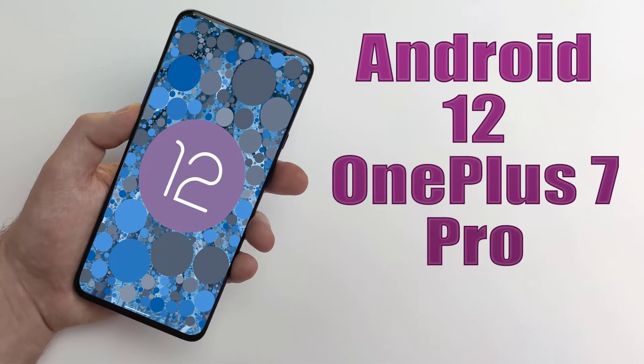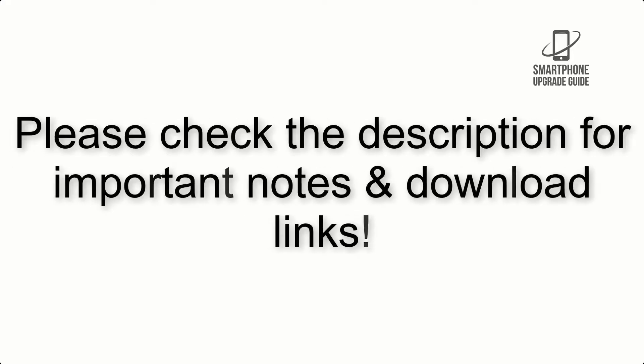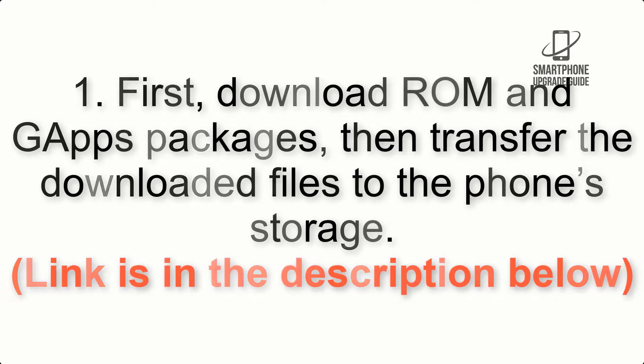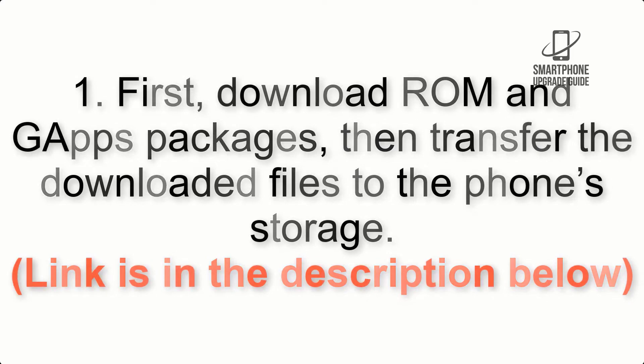Install Android 12 on OnePlus 7 Pro via Lineage OS 19.1. Please check the description for important notes and all the download links. First, download the ROM and GApps packages, then transfer the downloaded files to the phone storage. The link is in the description below.